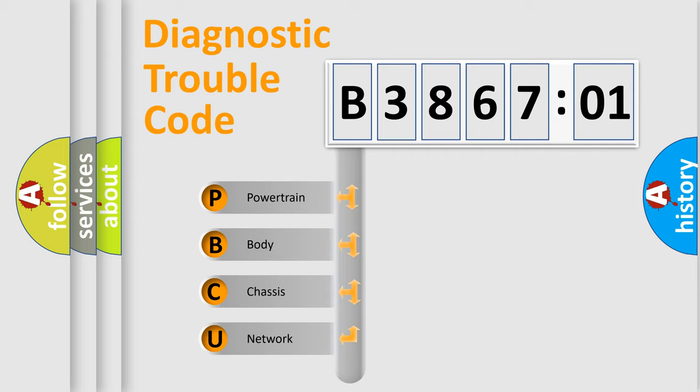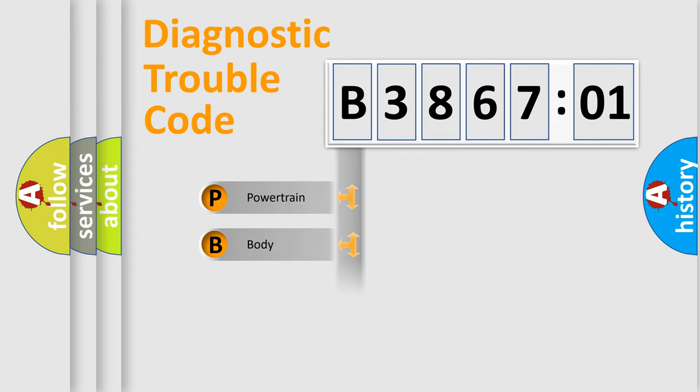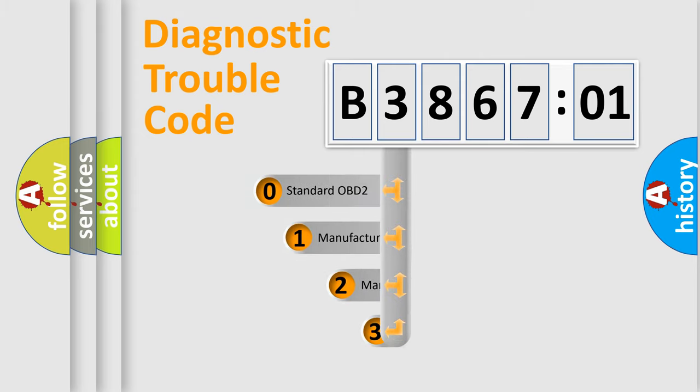We divide the electric system of the automobile into four basic units: Powertrain, Body, Chassis, and Network. This distribution is defined in the first character code.